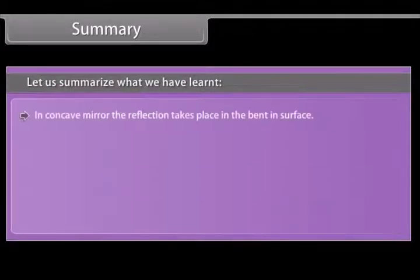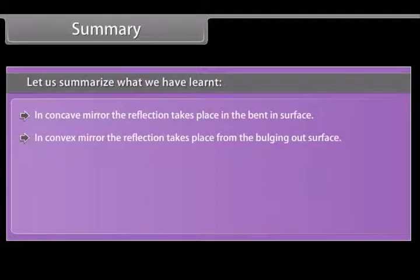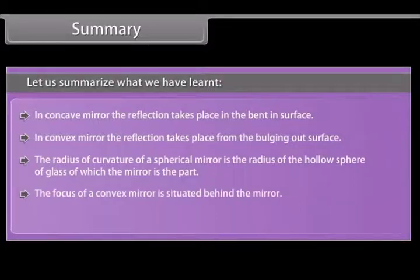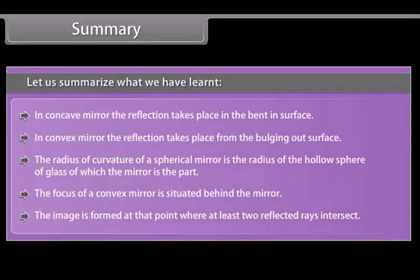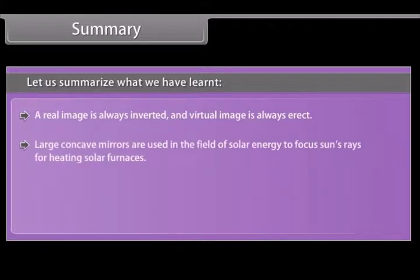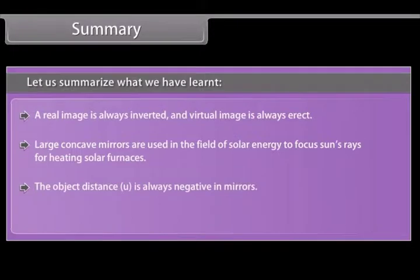Summary: In a concave mirror, reflection takes place at the bent-in surface. In a convex mirror, reflection takes place at the bulging-out surface. The radius of curvature is the radius of the hollow sphere of glass of which the mirror is a part. The focus of a convex mirror is situated behind the mirror. An image is formed where at least two reflected rays intersect. A real image is always inverted and a virtual image is always erect. Large concave mirrors are used in solar energy to focus the sun's rays for heating solar furnaces. The object distance U is always negative in mirrors.